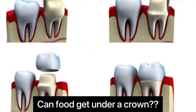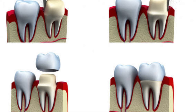Can food get under a crown? Dental crowns often last 10, 20, or sometimes 30 years or more with good oral hygiene habits and regular dental check-ups. When functioning properly, food should not accumulate around them. However, sometimes a cavity starts underneath a crown and it no longer has a tight seal over the tooth.